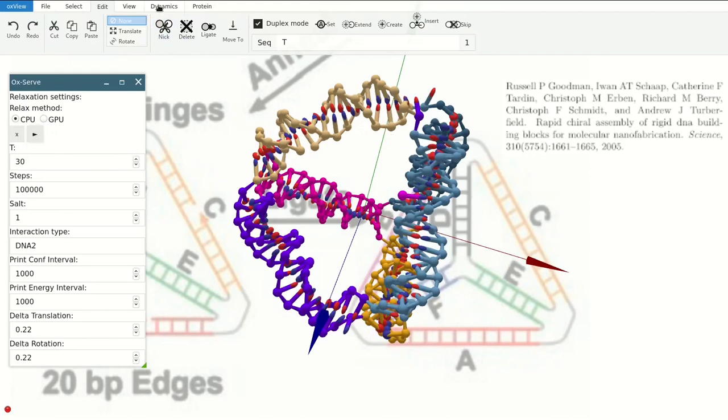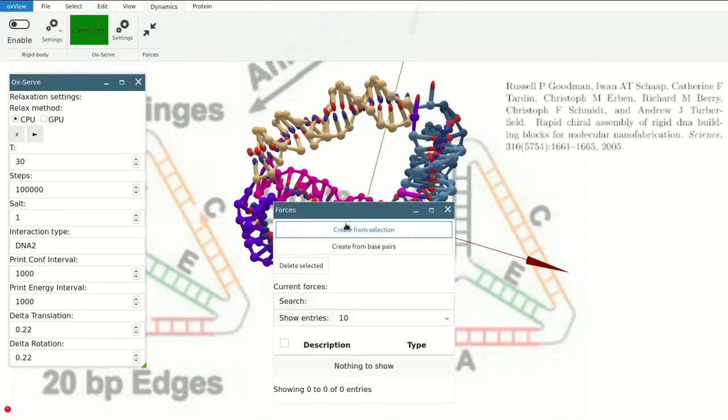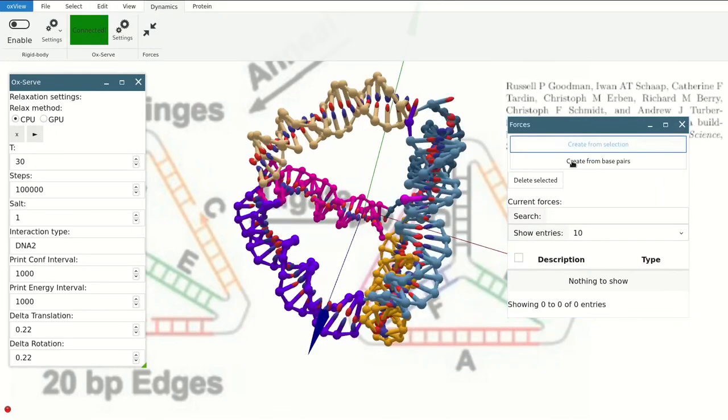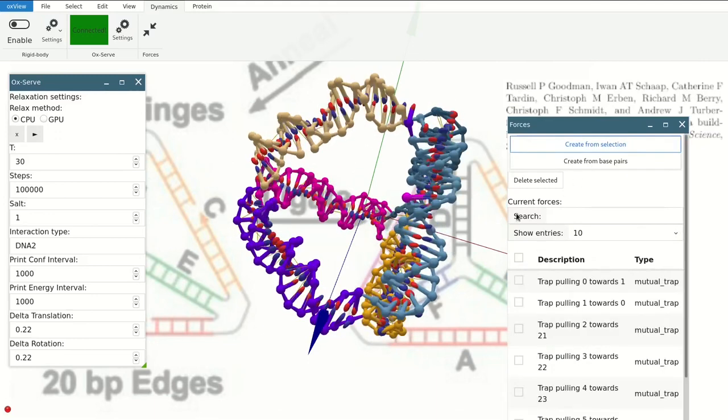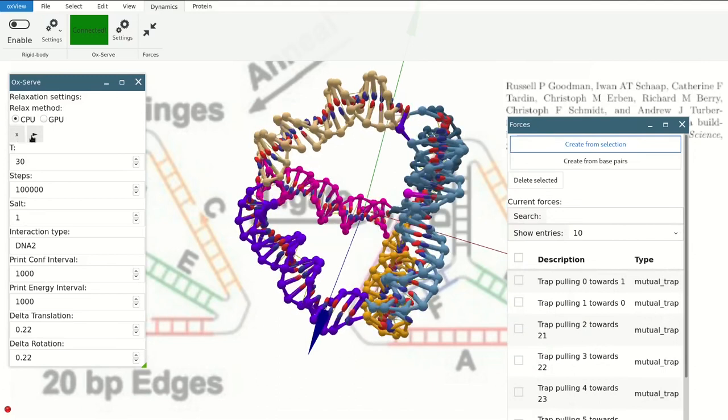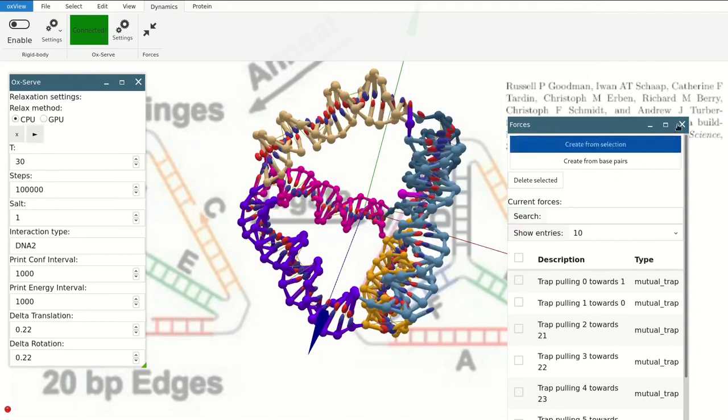If I wanted to add some forces, maybe have from all the base pairs so that they are pulled together, then I can just create from base pairs and we have all these trap forces as you can see here. If I just restart the simulation, it will take that into account, which is pretty nice.